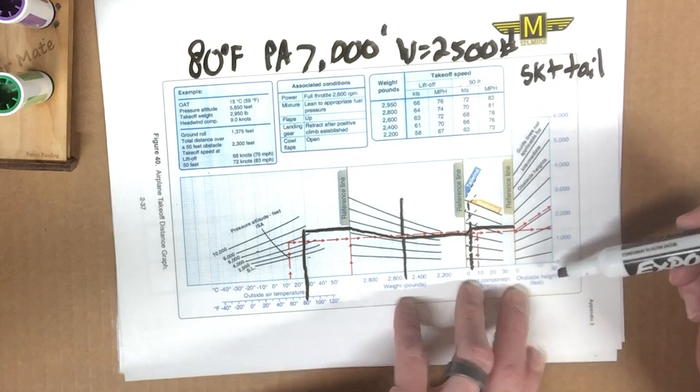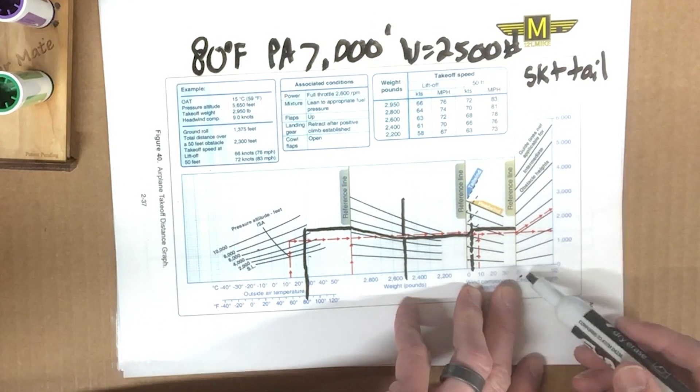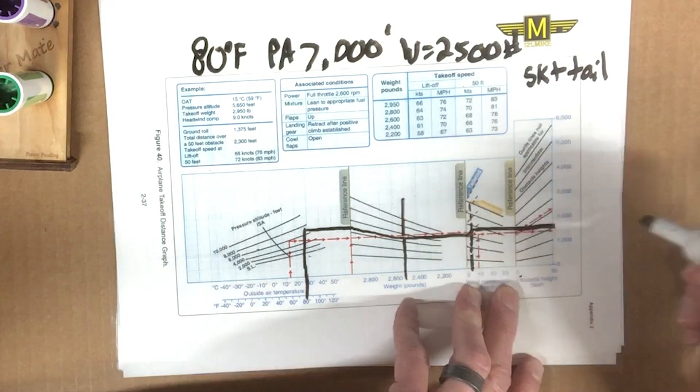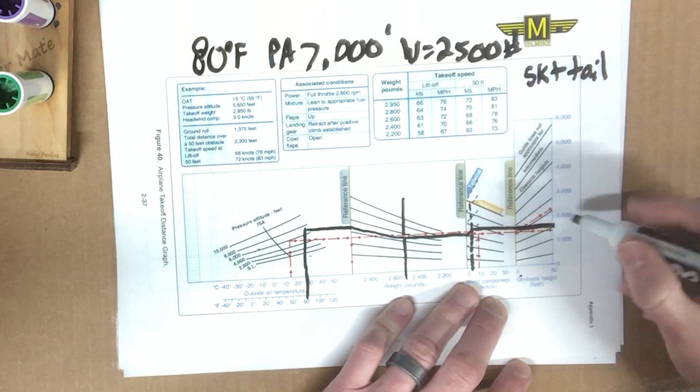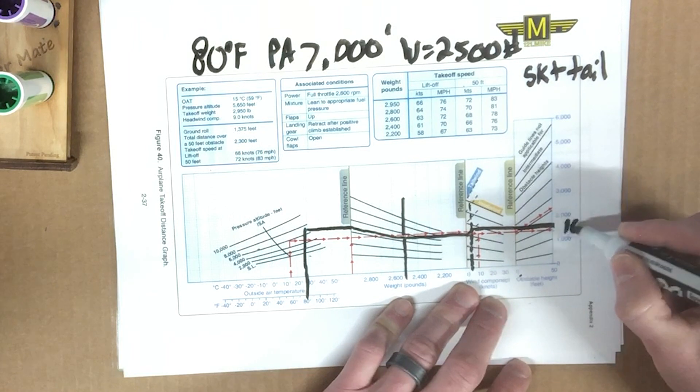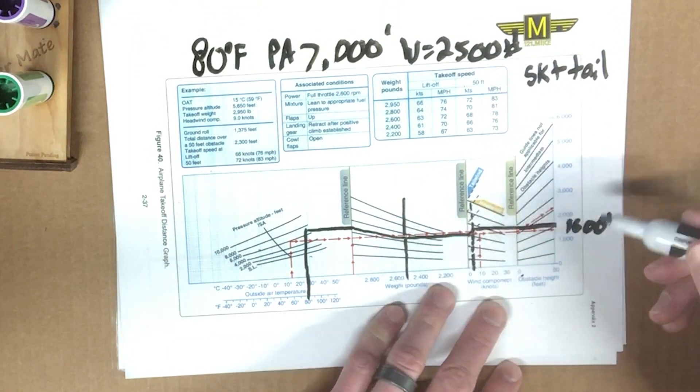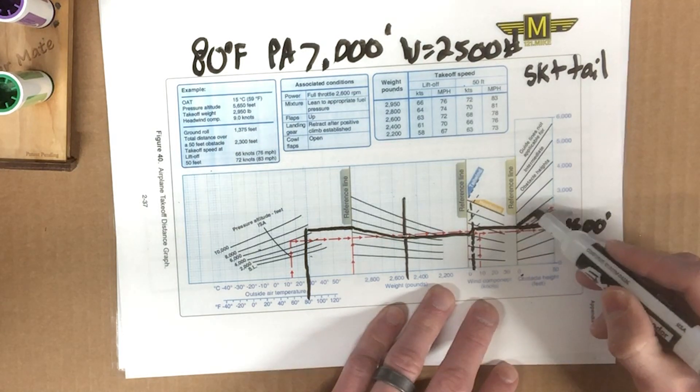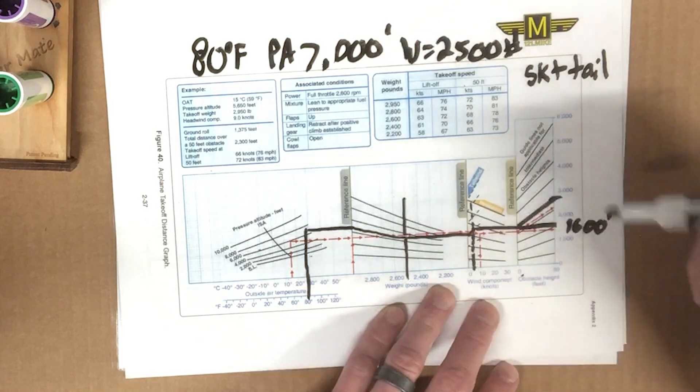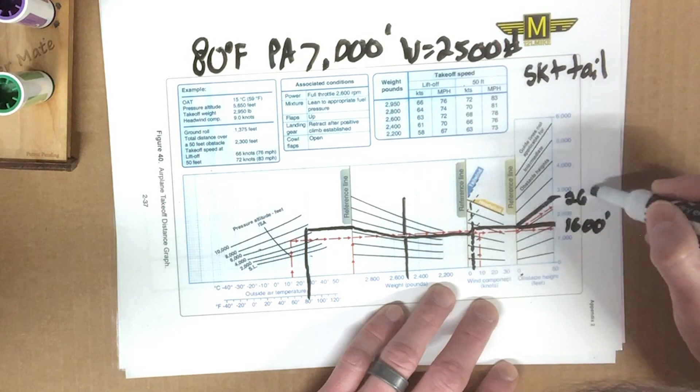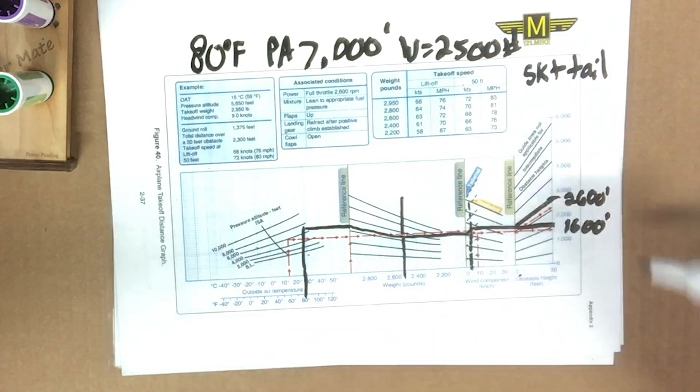Now we have an obstacle height. An obstacle height of 0, remember, corresponds to we just lifted off. So we're going to come straight out there. And it appears that our ground roll was about 1, 2, 3, 4, 5, 6, 1,600 feet for a ground roll. And then to get our 50-foot obstacle clearance height, we're going to fly up parallel to this other black line and pop out up here, which appears to be about 2,600 feet. So there's your two answers once again, without doing any math.